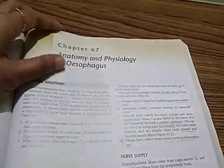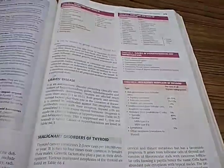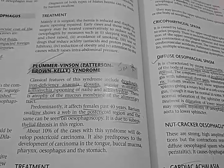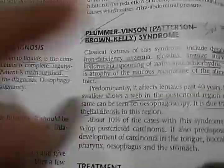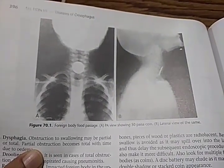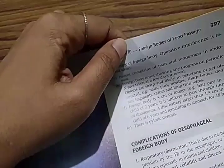Then anatomy and physiology of the esophagus — but first there is the thyroid section, showing the structure of thyroid parafollicular C cells. Then the esophagus chapter covers Plummer-Vinson (Patterson-Brown-Kelly) syndrome, which is related to iron deficiency anemia. There is also a case of a foreign body in the food passage — a 50-paisa coin stuck in the esophagus seen on a lateral view X-ray. The topic is foreign bodies of the food passage.